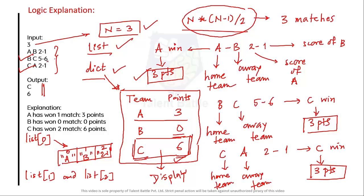Understand the problem statement properly, then it will be easy. Use the formula for a for loop ranging up to that condition. Take input by appending it to the list in space-separated fashion. Then initialize the dictionary at positions 0 and 1 to zero, because after identifying the winner the point calculations will follow using the grading system.